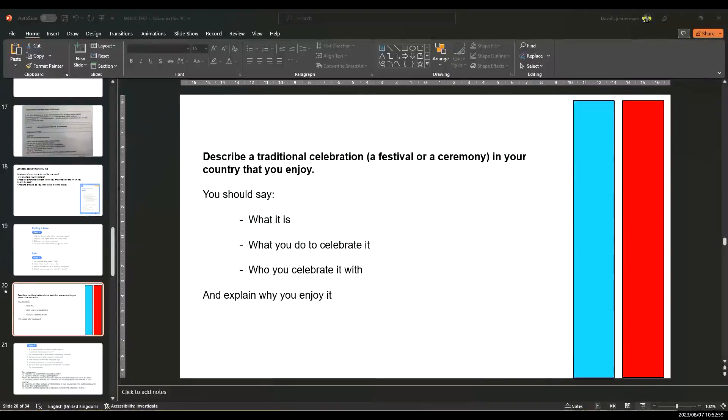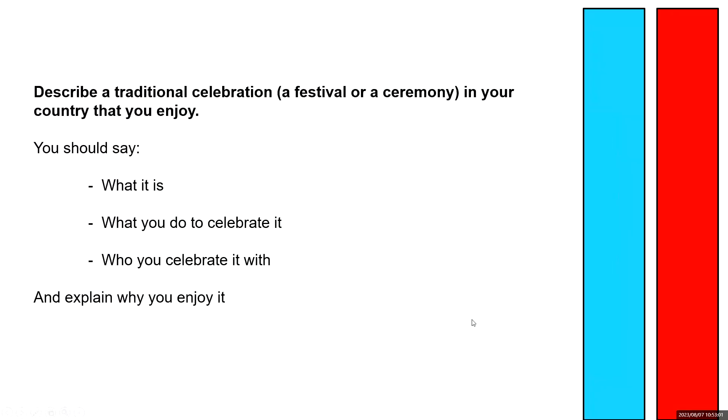In Part Two of the test, I'm going to give you a topic and I'd like you to talk about it for up to two minutes. Before you talk, you have one minute to think about what you're going to say and you can make some notes if you wish. Do you understand? Okay, so here is your topic. I'd like you to describe a traditional celebration, a festival or a ceremony in your country that you enjoy. And you have one minute to plan your answer.